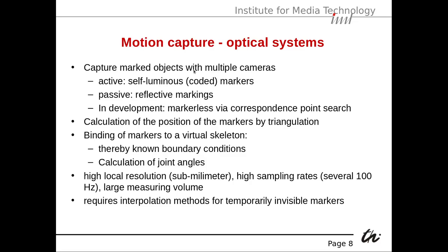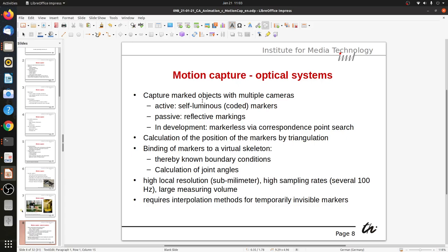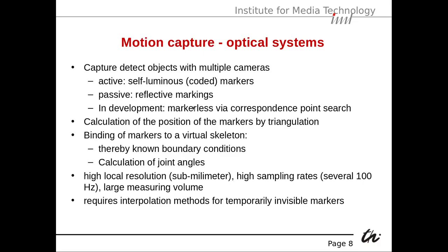Now, optical systems capture marked objects with multiple cameras. An active system uses self-luminous coded markers, such as little LED lamps. A passive system uses reflective markings. In development, there are markerless systems via correspondence point search, where a camera looks for points in consecutive frames and tries to estimate the movement — basically like video coding.